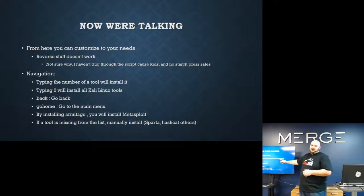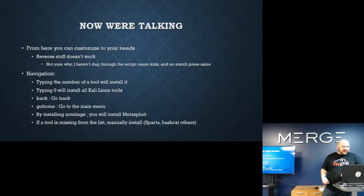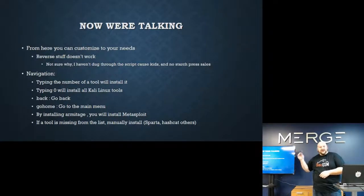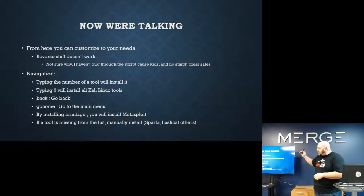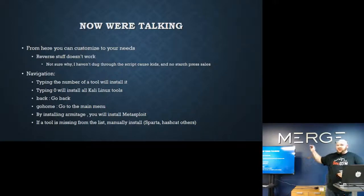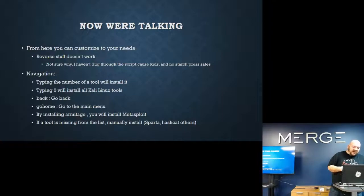Navigation in Katoolin is a menu-based UI — it's number-based, so you just drop in and select what you want. It installs all tools from the Kali distro list. You can go through and select individual tools from the menu headers, or if you want to install the whole Kali package, you can hit zero. 'Go back' drops you back a level, and 'Go home' drops you all the way back to the main menu.